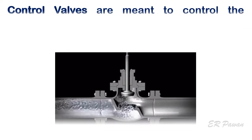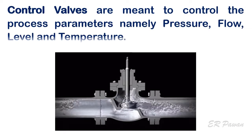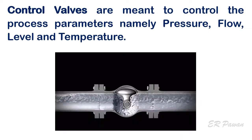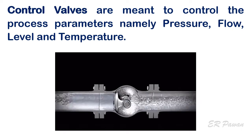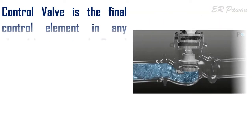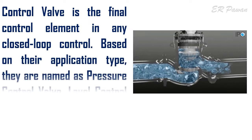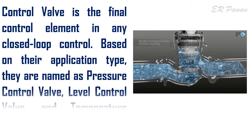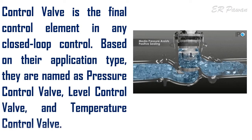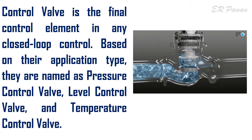Control valves are meant to control the process parameters namely pressure, flow, level, and temperature. Control valve is the final control element in any closed loop control. Based on their application type, they are named as pressure control valve, level control valve, and temperature control valve.